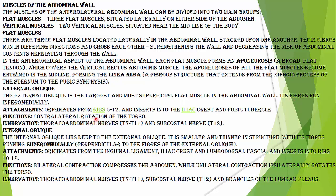The external oblique originates from the 5th to 12th ribs and inserts into the iliac crest. Its function is contralateral rotation of the torso. Innervation is through thoracolumbar nerves and subcostal nerve.